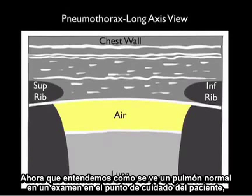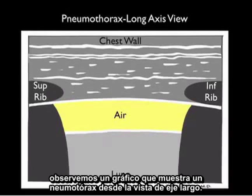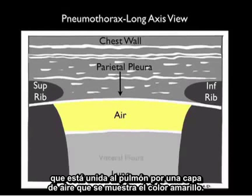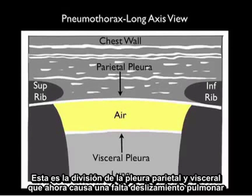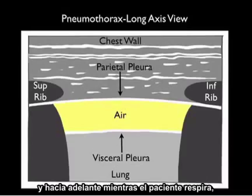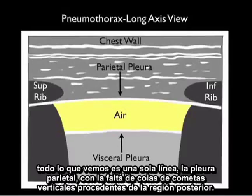Now that we understand what a normal lung looks like on bedside examination, let's take a look at a pictorial showing a pneumothorax in a long axis view. The parietal pleura is now split from the visceral pleura, which is attached to the lung by a layer of air. It's this splitting that causes a lack of lung sliding, and instead of the opposed visceral and parietal pleura sliding back and forth, all we see is a single line — the parietal pleura — with a lack of vertical comet tails coming off the back.